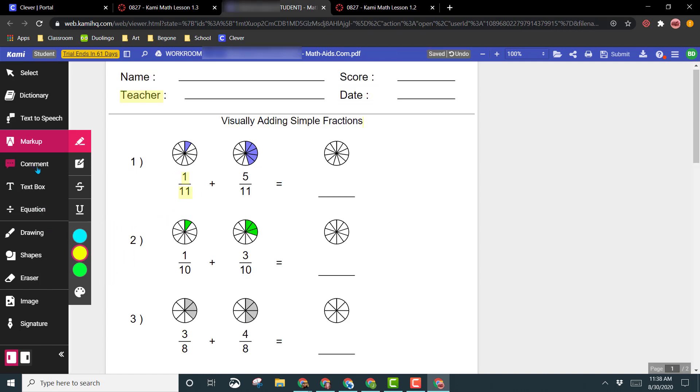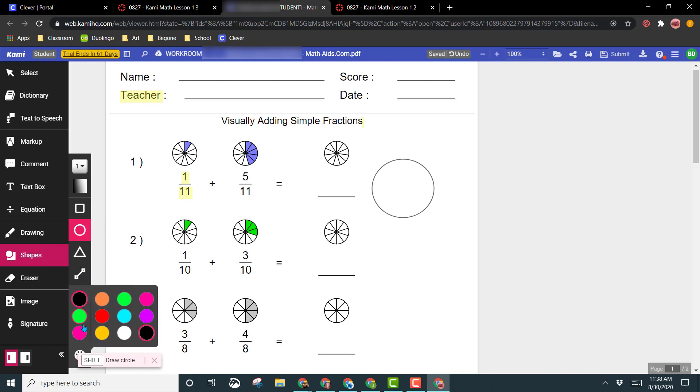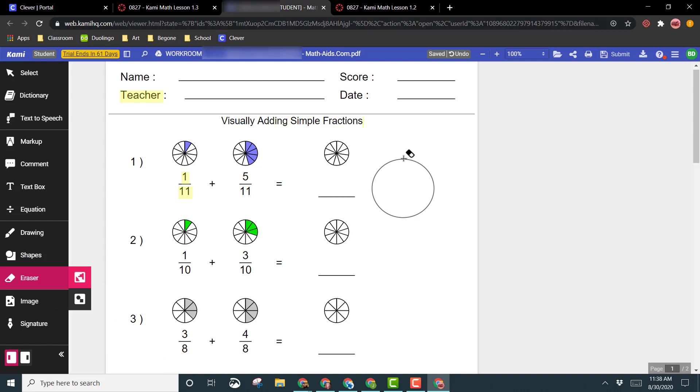If you want to draw shapes, you can come down here to shapes, choose whatever shapes you want, left click and drag to make the size that you want. You can also choose different colors. Right underneath you see the eraser. We can left click and erase anything that we have put on here just by left clicking on it.